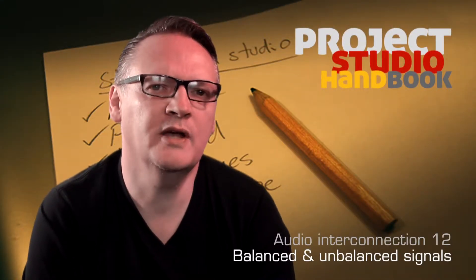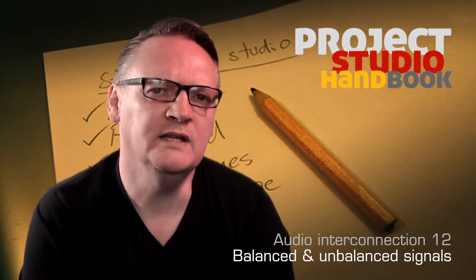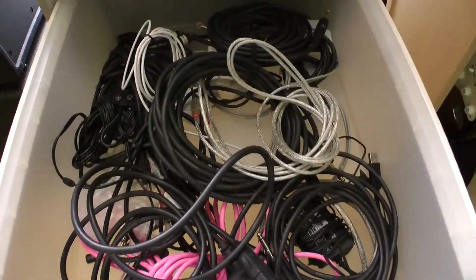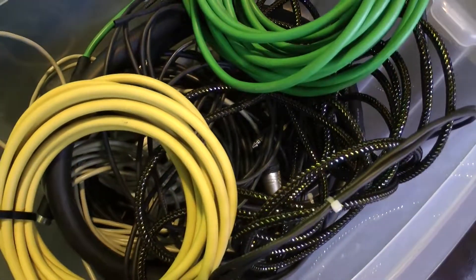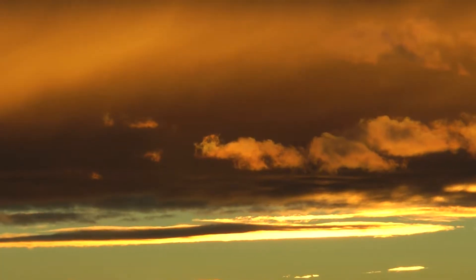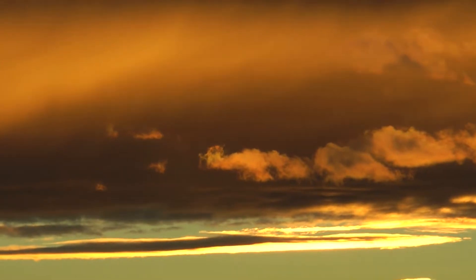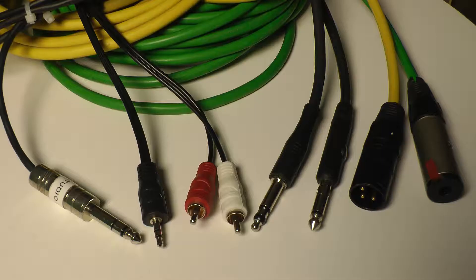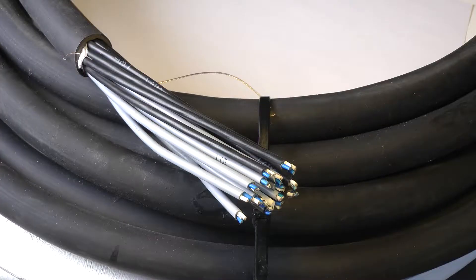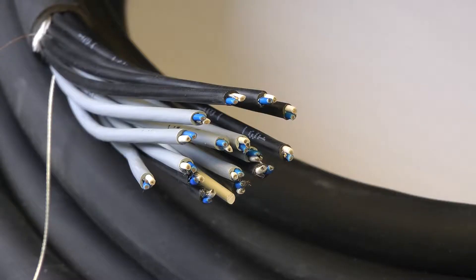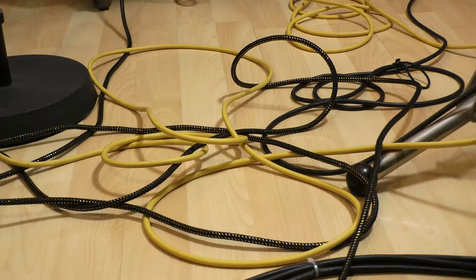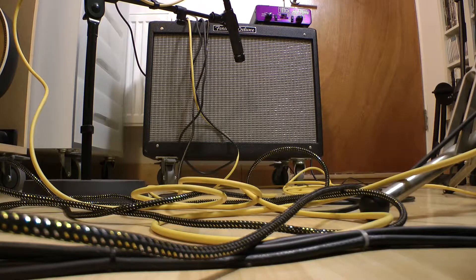Welcome to this tutorial on unbalanced and balanced signals. All leads are prone to radio frequency interference from electromagnetic radiation caused by radio waves, adjacent electronic circuits and devices, and even the sun's rays. This is because they behave like antennas. Also, cables have a property called resistance, which is like friction to an electrical signal, causing signals to lose some of their energy, particularly high frequencies.